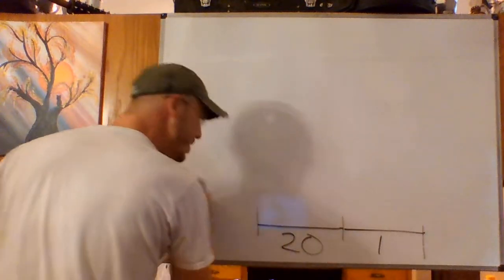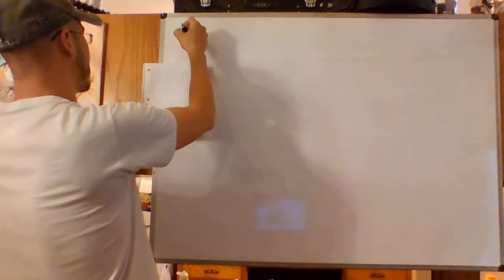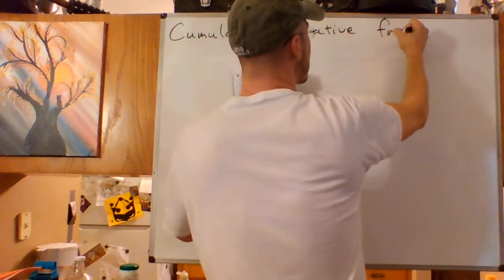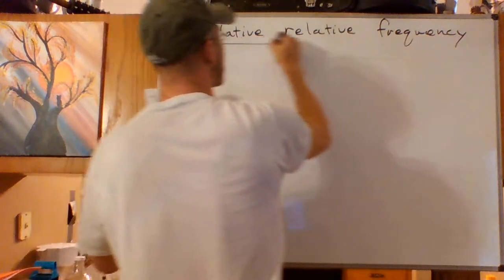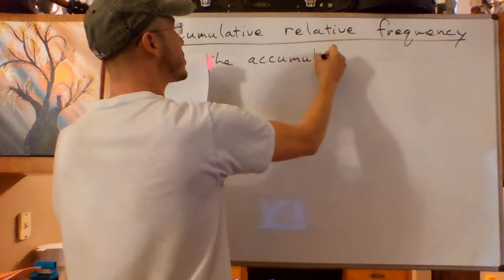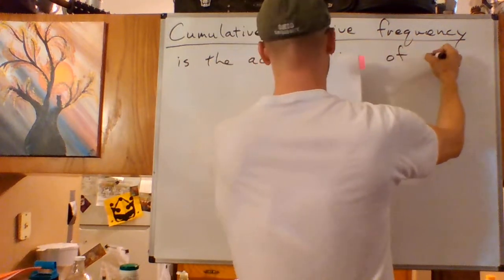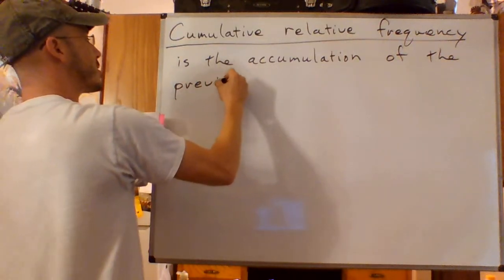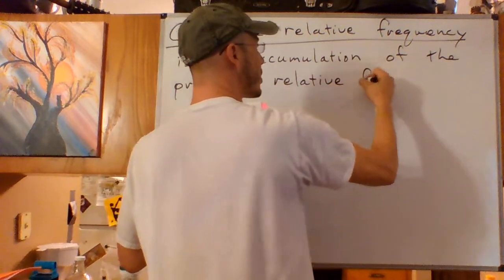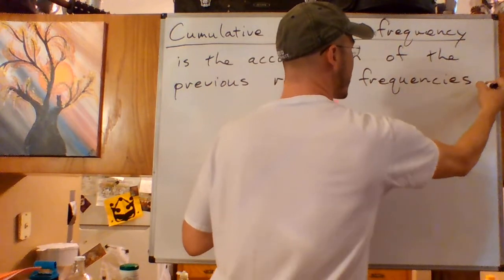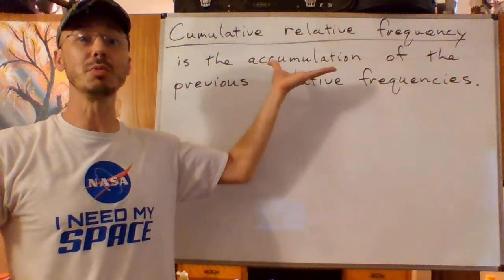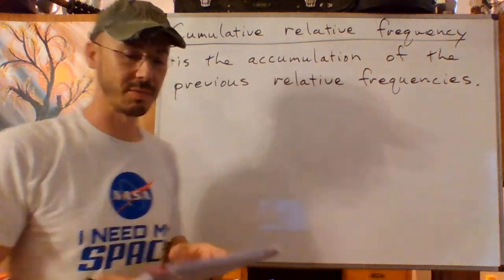So let me conclude this by putting a verbal definition for cumulative relative frequency. We had a frequency and relative frequency definition earlier. Cumulative relative frequency is the accumulation of the previous relative frequencies. So remember we added up the relative frequencies kind of as a running total. The accumulation of those gives us the cumulative relative frequencies of the different values.